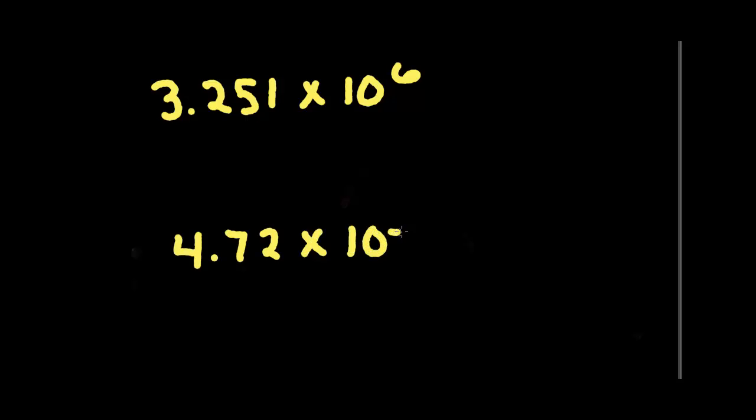Okay, so here's another example. Let's say we have 3.251 times 10 to the sixth and we have 4.72 times 10 to the negative one.